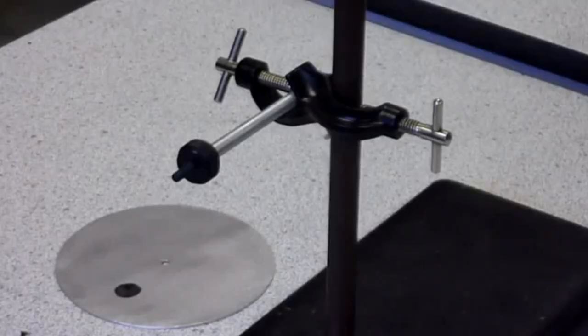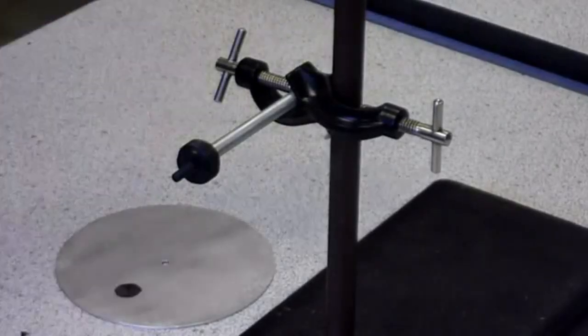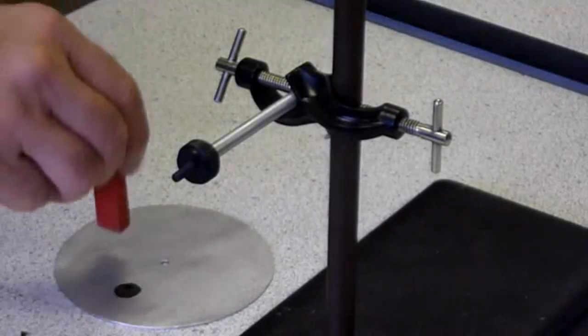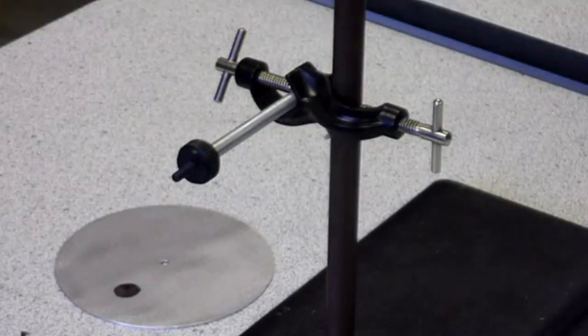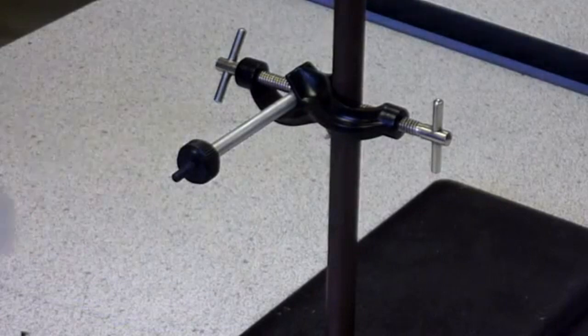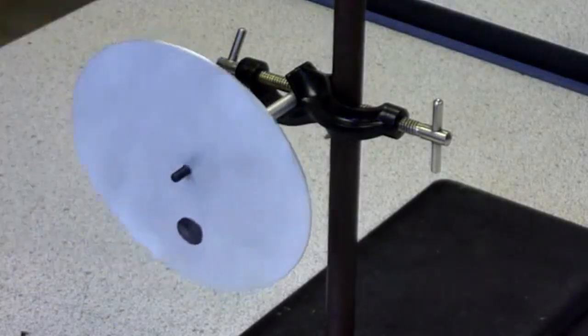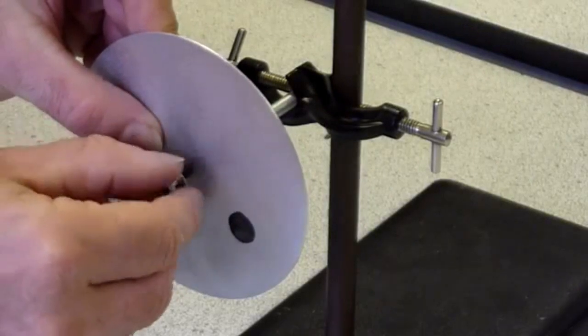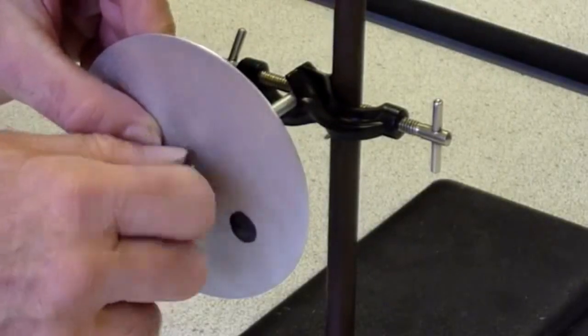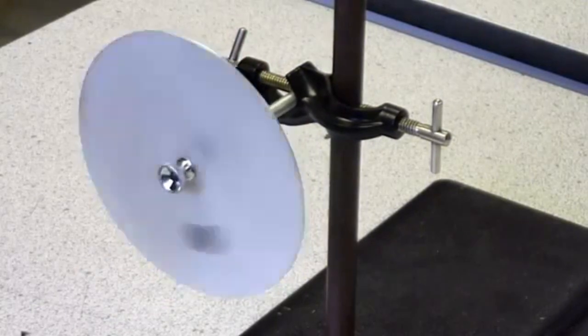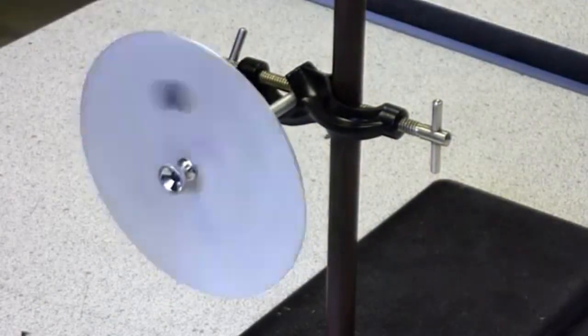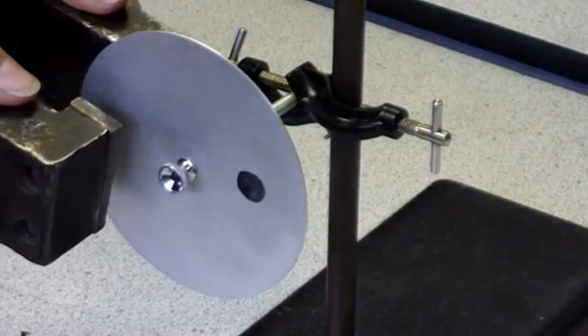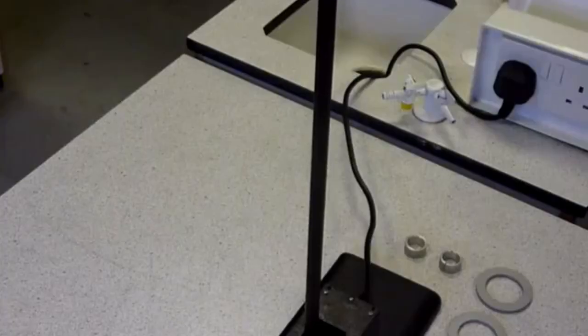This is the principle of electromagnetic breaking. The aluminium disc spinning in a magnetic field generates a current. This generated current produces a magnetic field which slows down the disc.